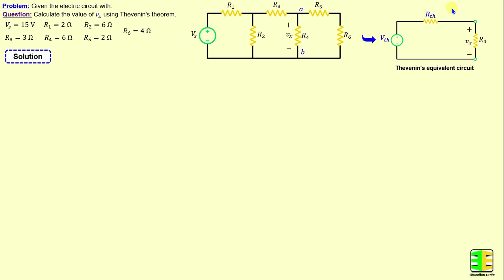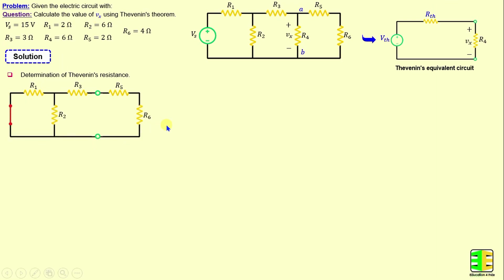I will start with the determination of Thevenin's resistance. This step is done by removing all independent sources — the voltage source is replaced by a short circuit, and current sources are replaced by an open circuit. The Thevenin resistance represents the equivalent resistance between terminals A and B when R4 is disconnected. Rth equals the parallel combination of R1 and R2, in series with R3, and parallel to the series combination of R5 and R6.